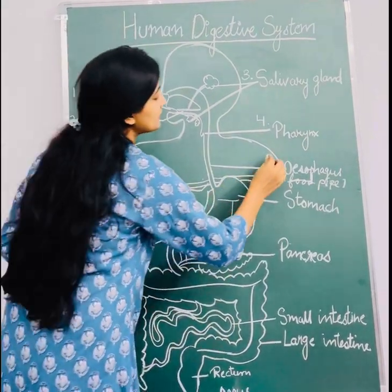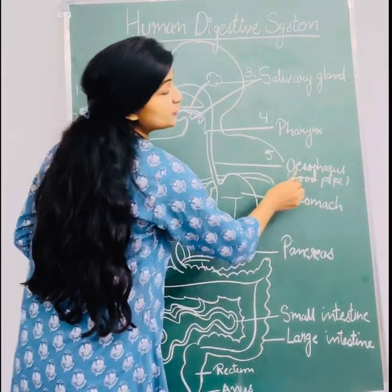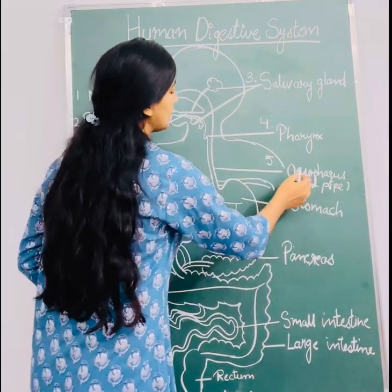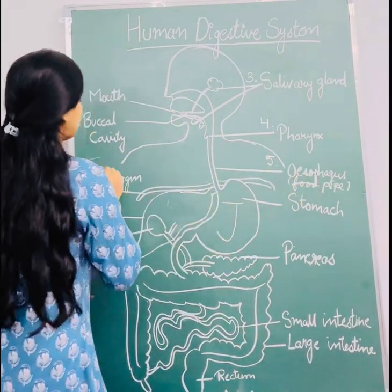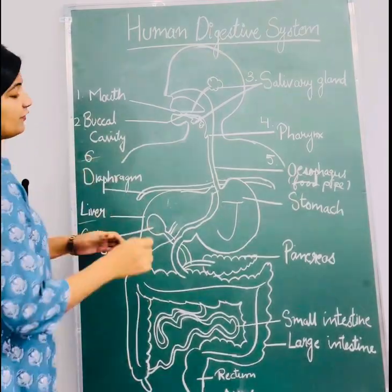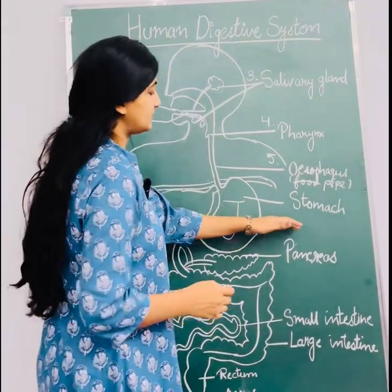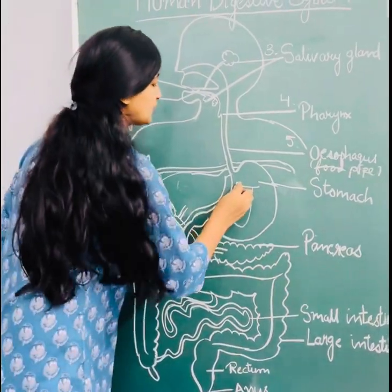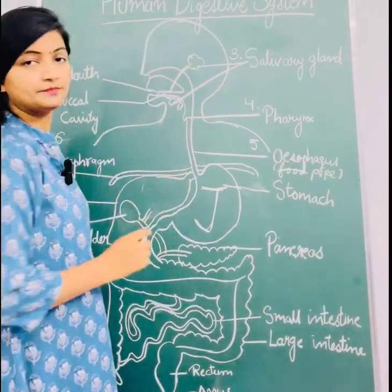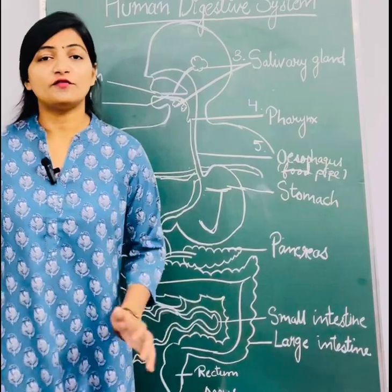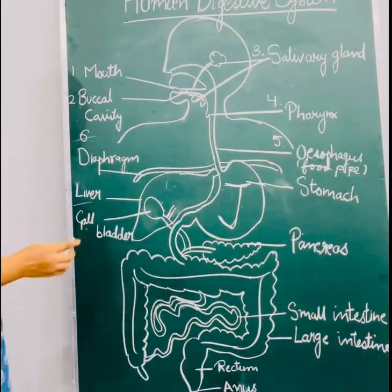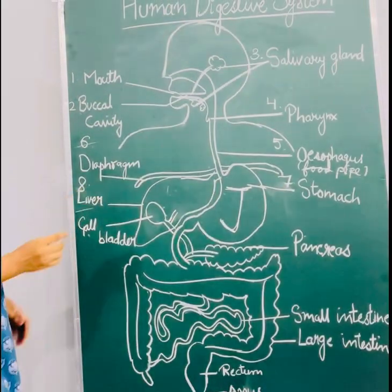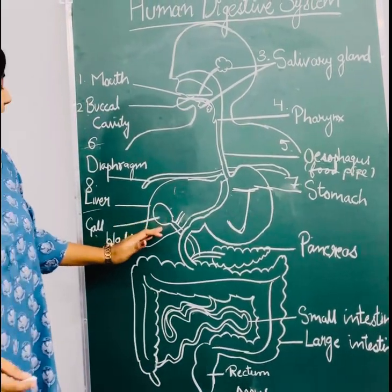Then comes the esophagus, which is also called the food pipe because food passes through it. Below the diaphragm, the stomach is present. The stomach is a J-shaped structure.